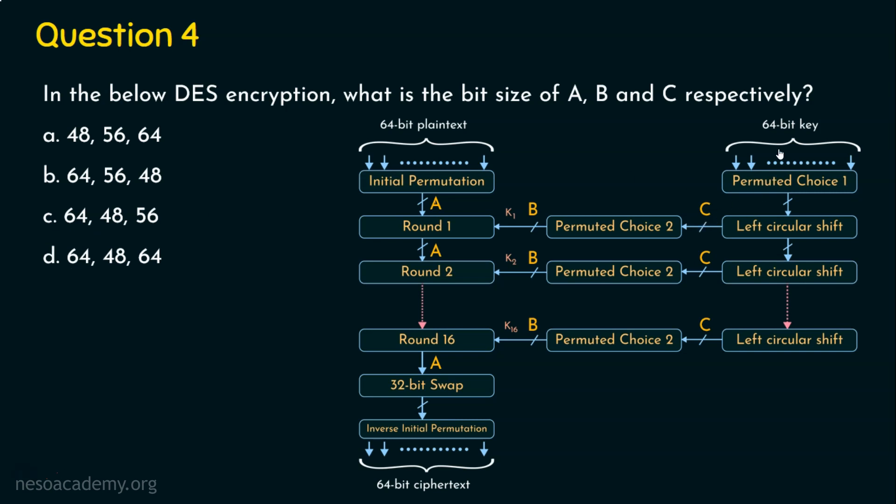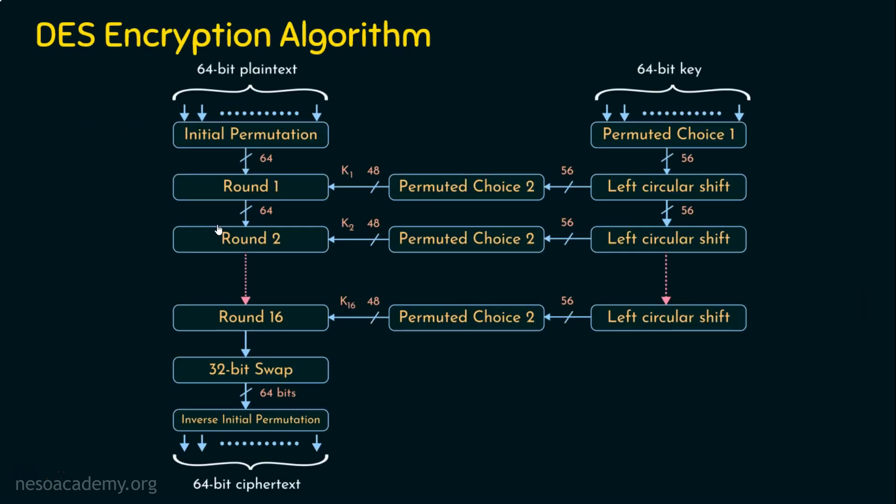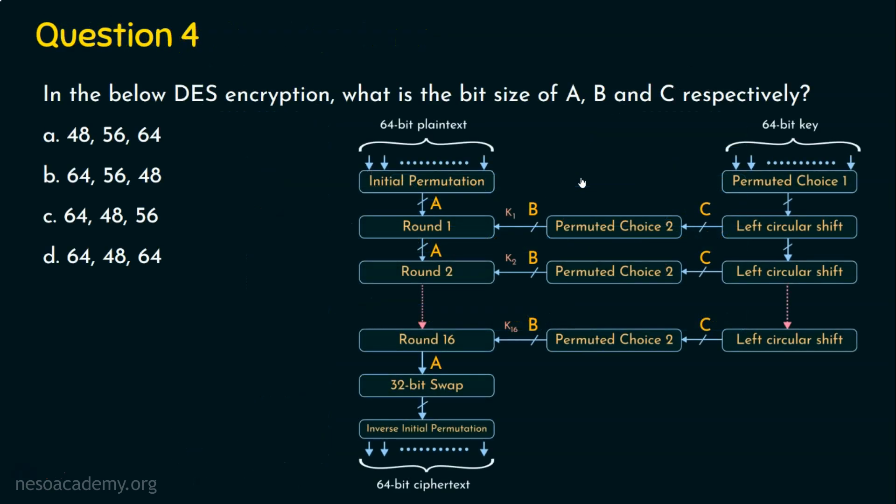And coming to the C part. If you see here, the original key length is 64 bits. And it is actually converted into 56 bits. And the effective key size is 56 bit. And that is why we say DES is having the effective key size as 56 bits. C is actually 56. Now, which option is matching? Option C which is 64, 48 and 56. If you see the actual DES encryption diagram, you will confirm that A which is 64, B which is 48 and C which is 56. The right answer for this question is option C 64, 48, 56.